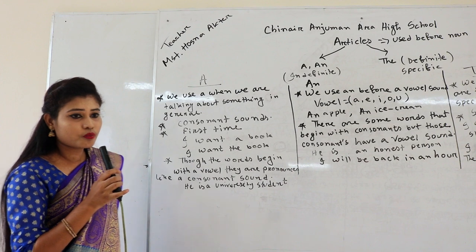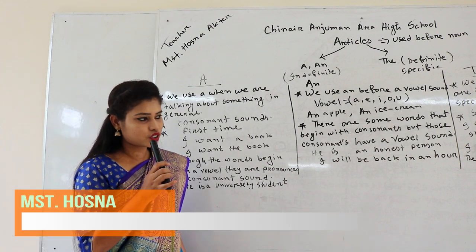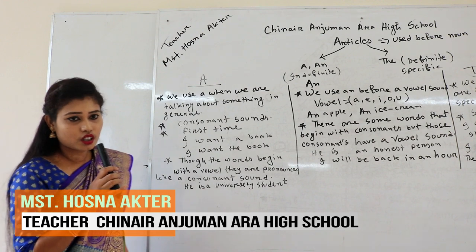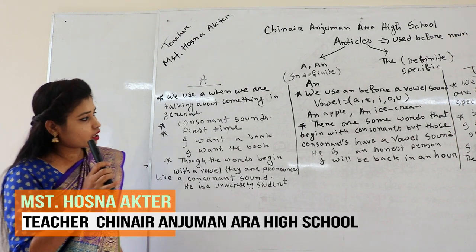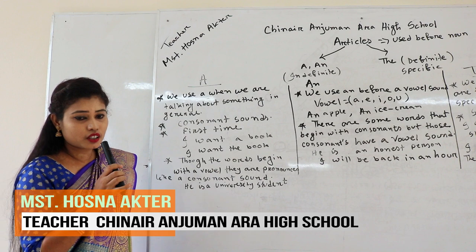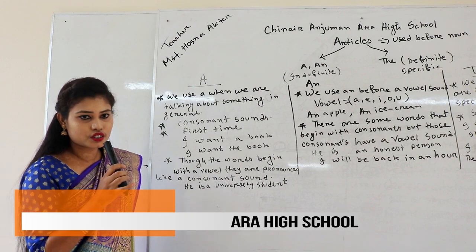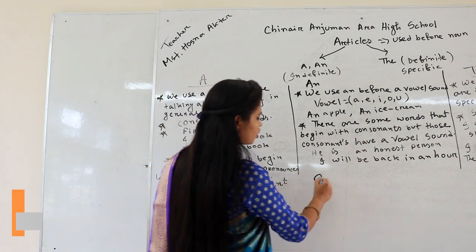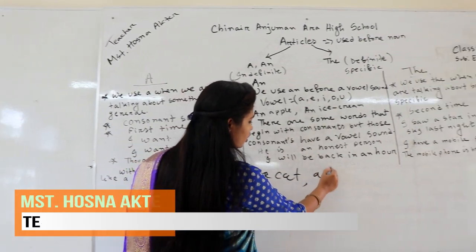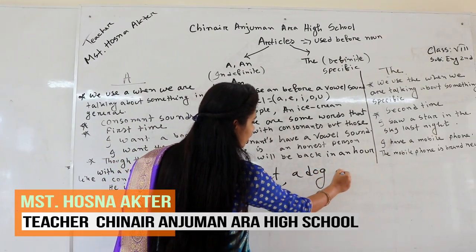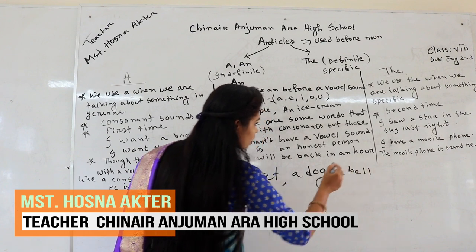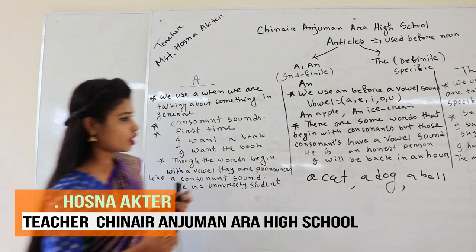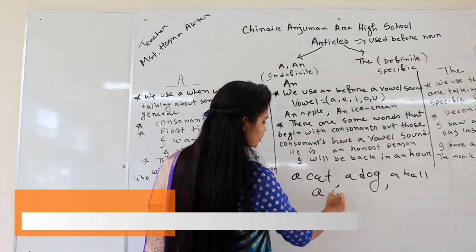We also use 'a' before consonant sounds. We know there are 26 letters in the English language — five are vowels and the rest are consonants. For example: a cat, a dog, a ball, and so on.